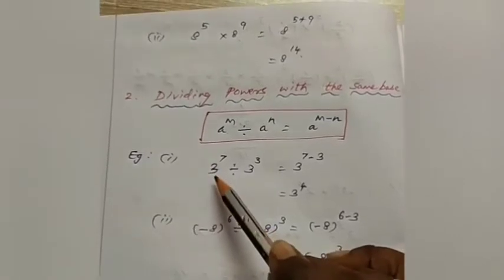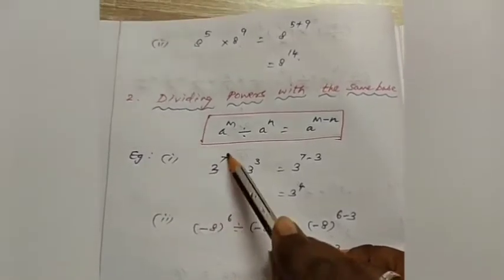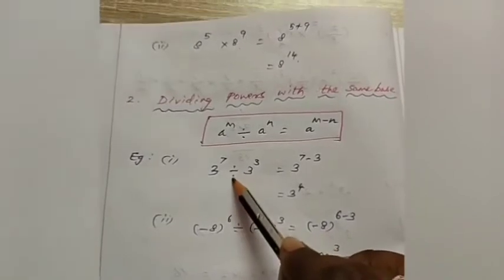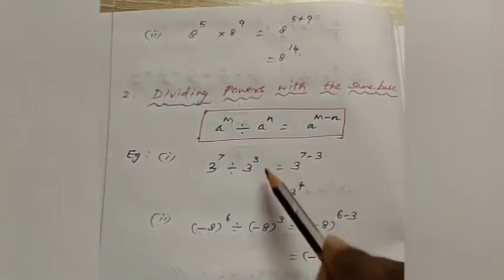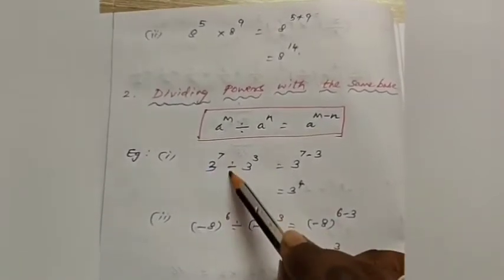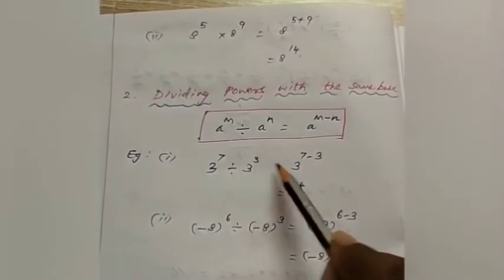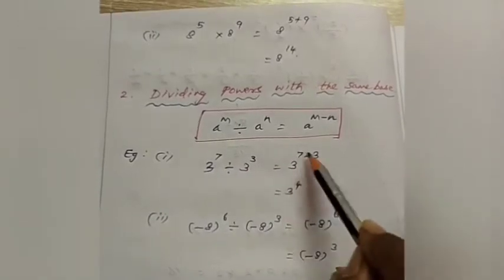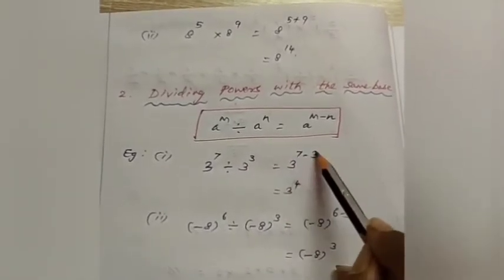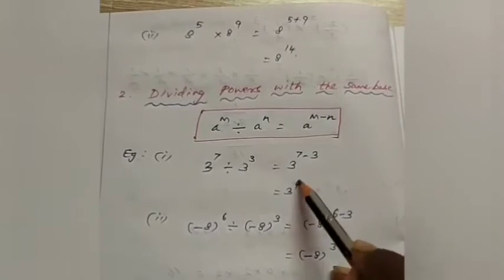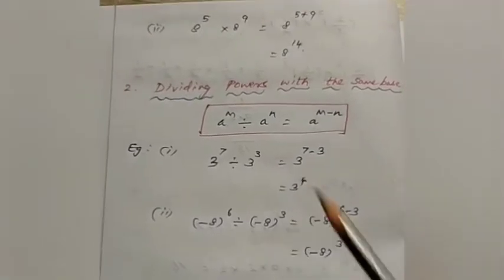For example, 3 power 7 divided by 3 power 3. The bases are the same and it is division, so we subtract the powers: 3 power 7 minus 3. Since 7 minus 3 equals 4, the answer is 3 power 4.